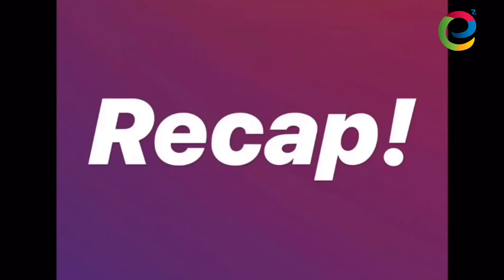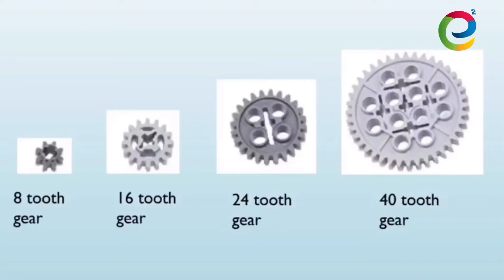Before we begin today's lesson, let's do a quick recap. Let's assume I have two gears — a 42-tooth gear and an 8-tooth gear. I'm going to put these two gears together and attach a motor to the 42-tooth gear. Using velocity's gear ratio, you'll know that for every one turn the 42-tooth gear makes, the 8-tooth gear will spin 5 times. Thus, speed increasing transmission.